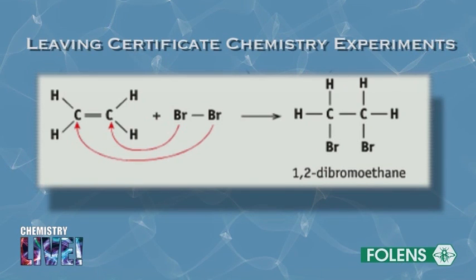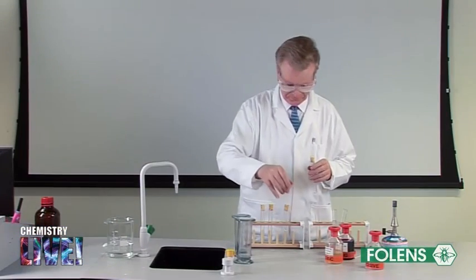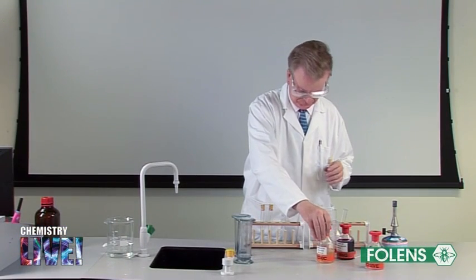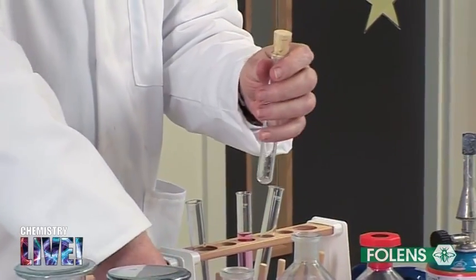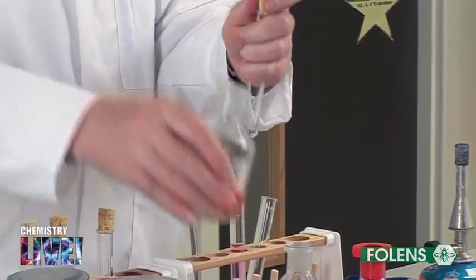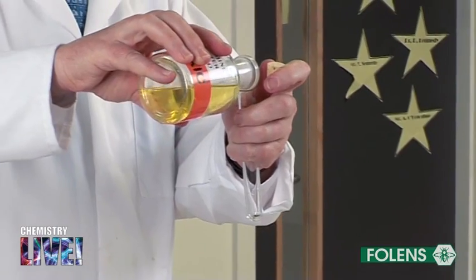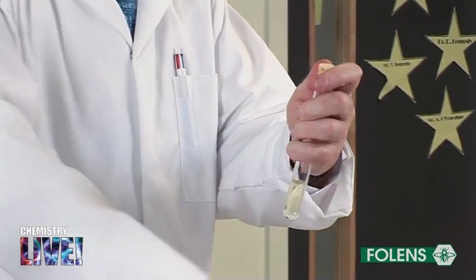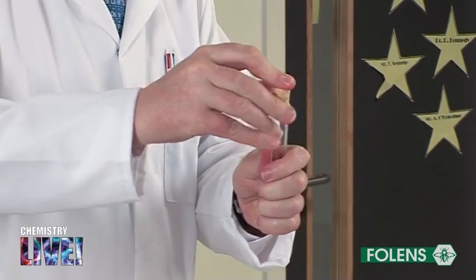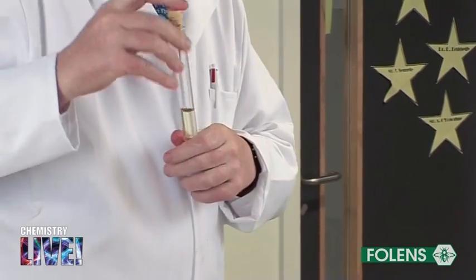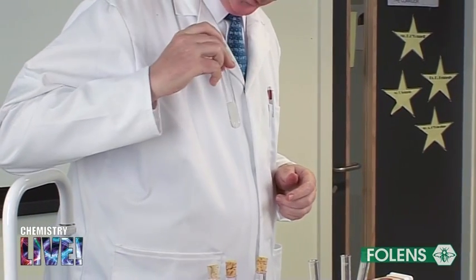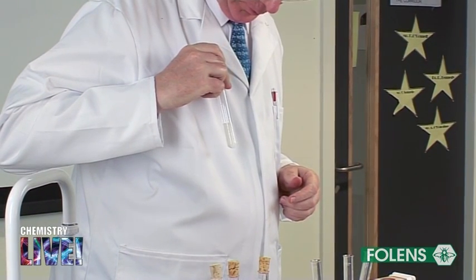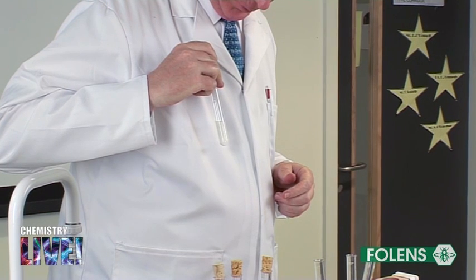A solution of bromine in water is commonly called bromine water. Let's see what happens if we add some bromine water to a test tube of ethene. Replace the stopper and shake the test tube a few times. Note that the yellow color of the bromine water solution disappears.